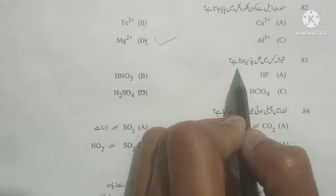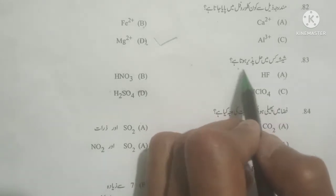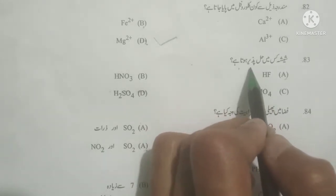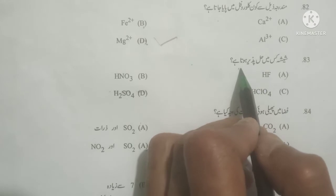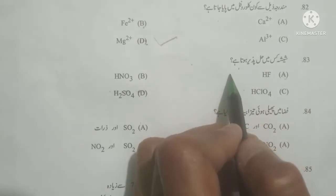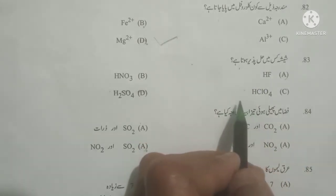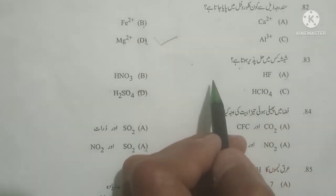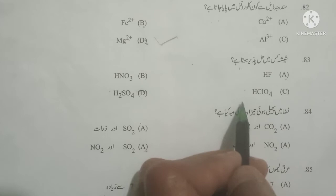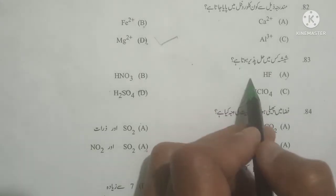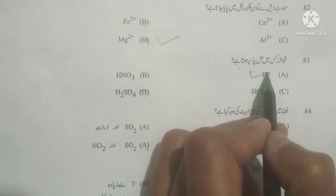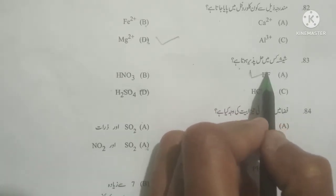Next question: Shisha kis mein khal pazir hota hai? Glass is soluble in which of the following acids? As you know, glass is soluble only in hydrofluoric acid, HF.